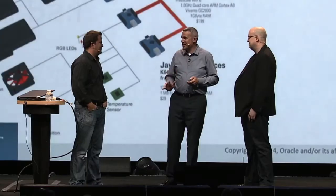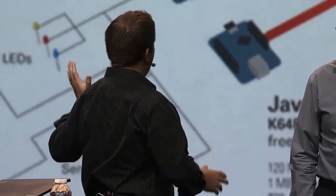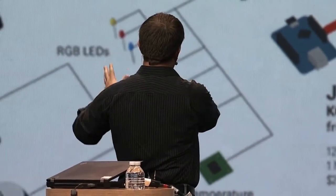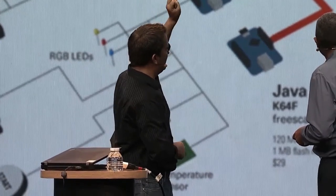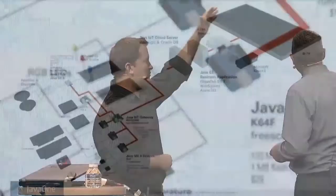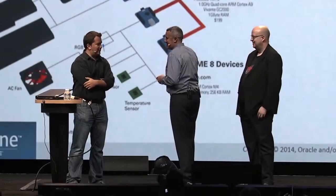It was a challenge. So what are we doing this year? Jasper's genius crew has been working really hard to bring you a complete end-to-end demo, similar to last year where we had sensors, devices, touchscreens, Java ME Embedded, Java SE Embedded. We've got a cloud, EE7, WebSockets, AsyncIO, a Kinect, a TV, and a web browser. A big ball of different stuff - we put it all in there.